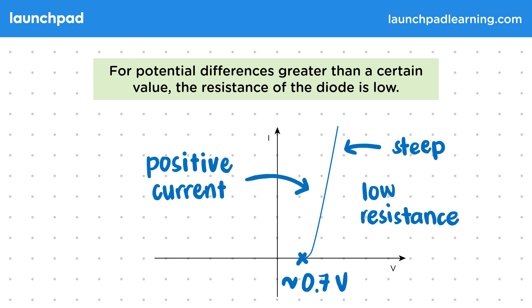So above the threshold potential difference, the diode will have little effect on the current.